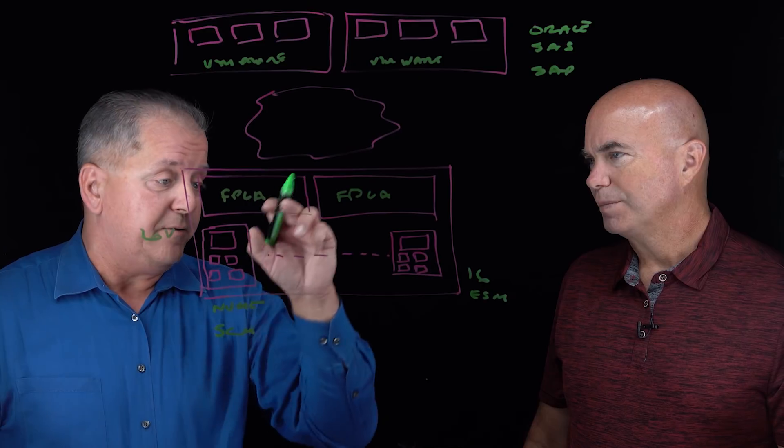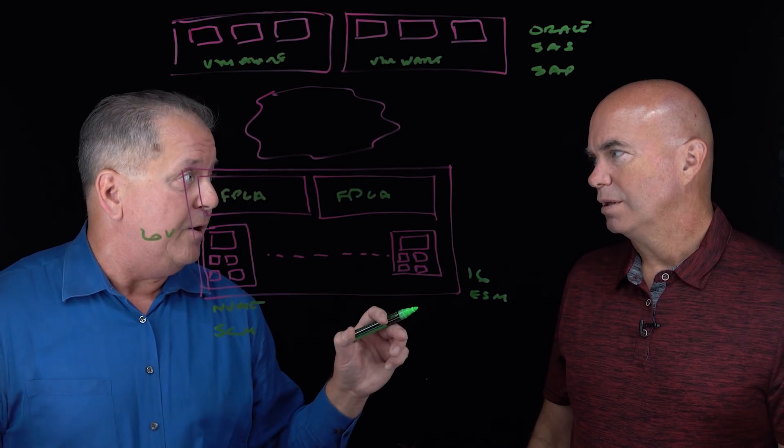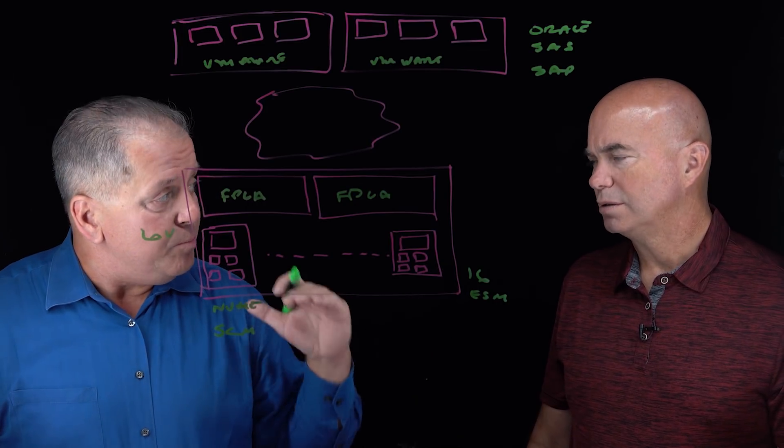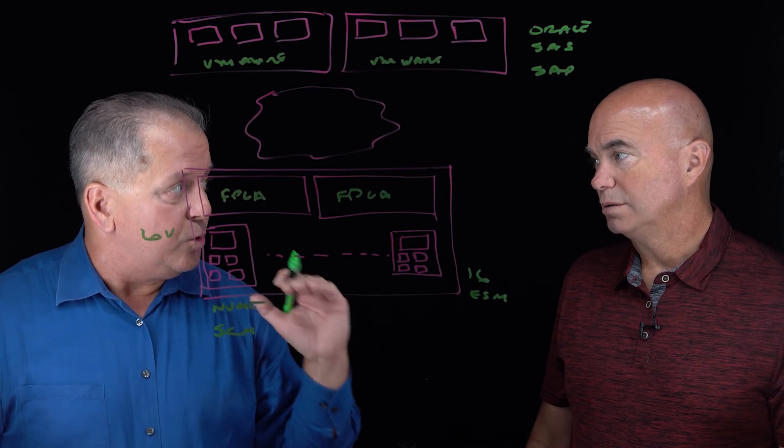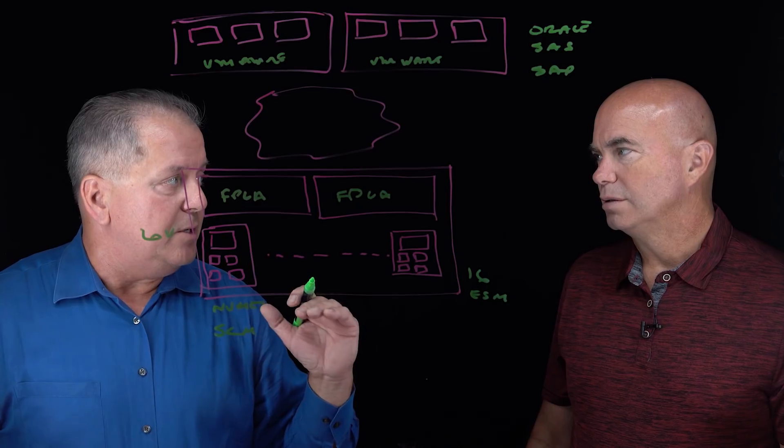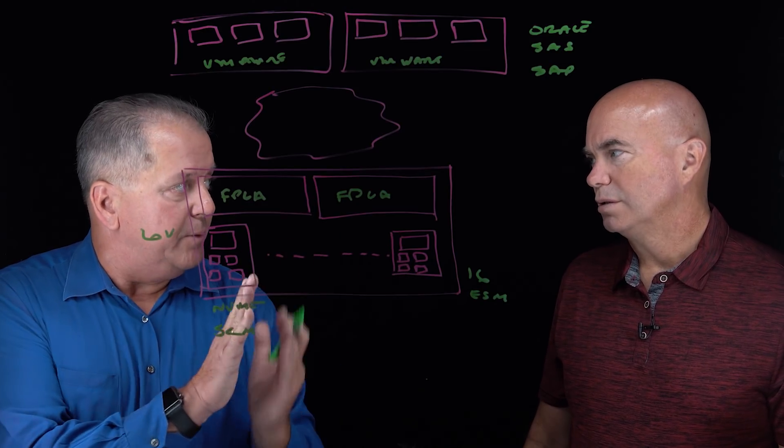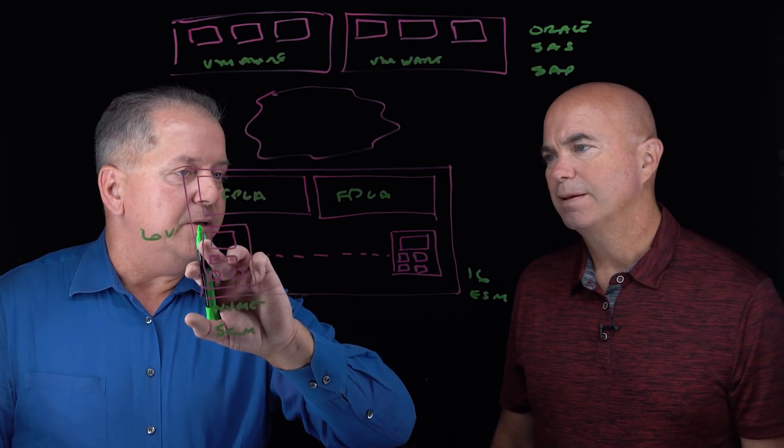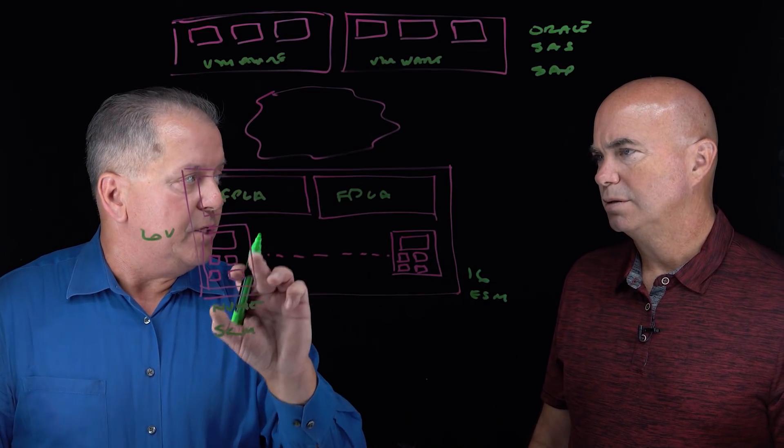Because the controllers have to essentially run all the I/O, plus they have to do all the RAID calculations, compression, encryption. So they're putting a lot of horsepower on the CPUs, but it ends up being a bottleneck to get the I/O through. We've taken a different approach. We've completely separated the fast path from the control path.